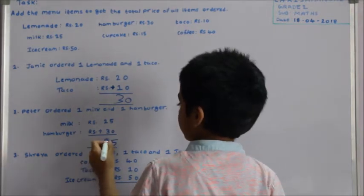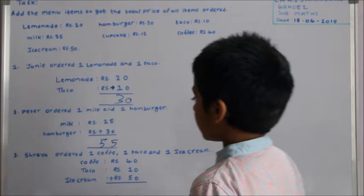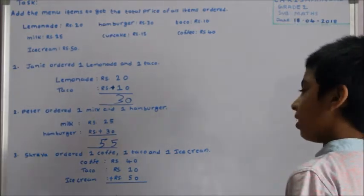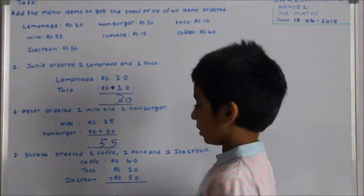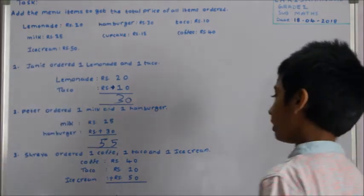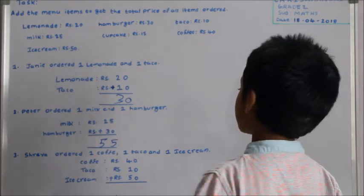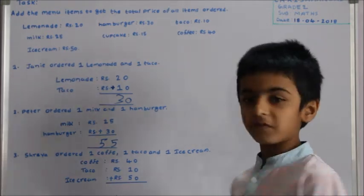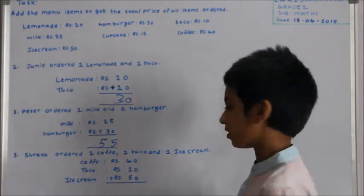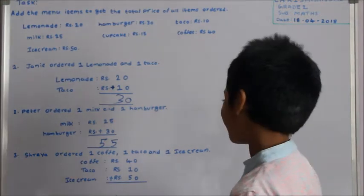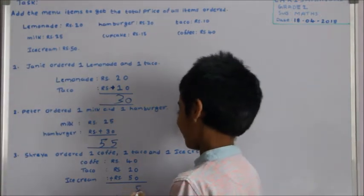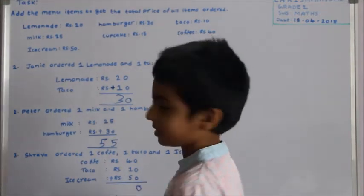Shreya ordered one coffee, one taco, and one ice cream. Coffee: rupees 40, taco: rupees 10, and ice cream: rupees 50. Zero plus zero is zero, zero plus zero is zero, four plus one is five, five plus five is ten. One hundred.